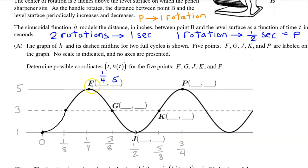Point F has coordinates one fourth comma five. Point G has coordinates three eighths comma three. Point J has coordinates one half comma one. Point K has coordinates five eighths comma three. And point P has coordinates three fourths comma five. And that is the end of part A.